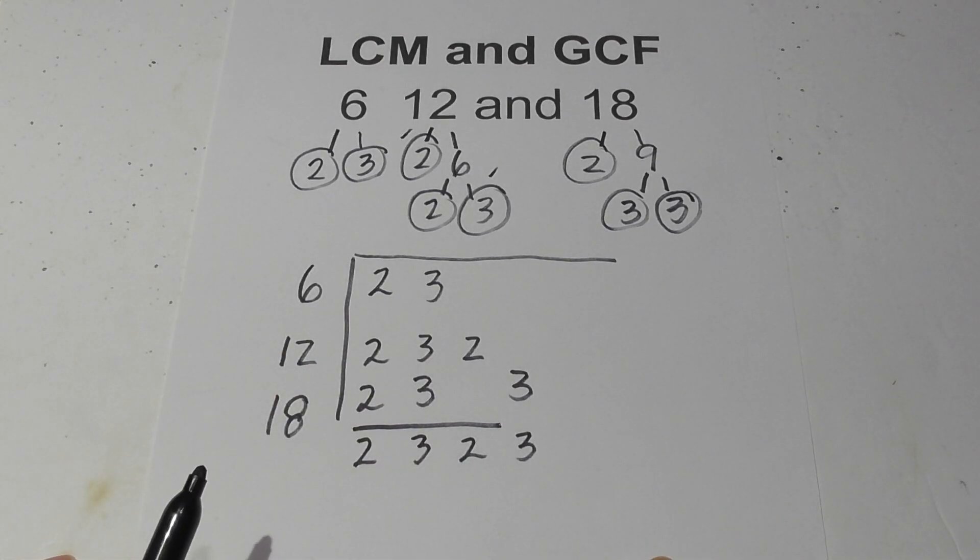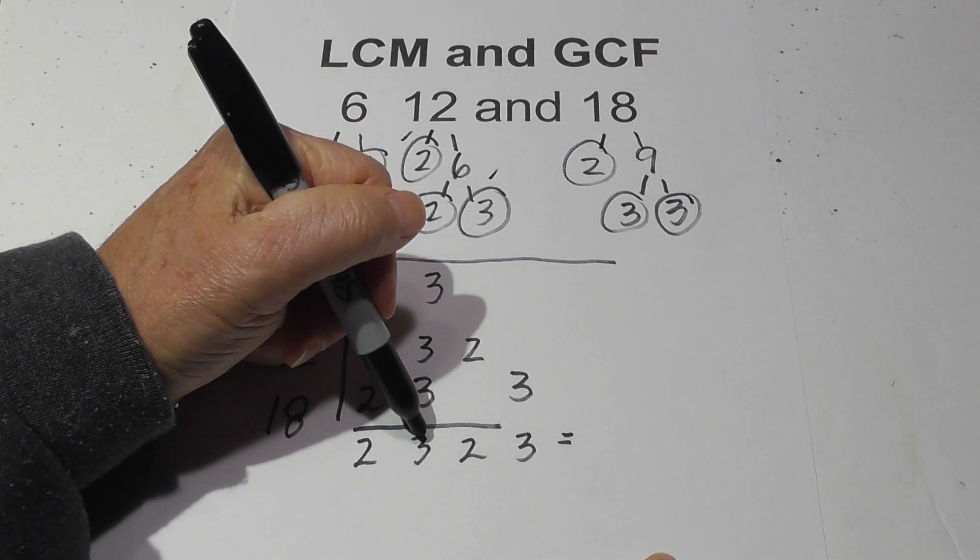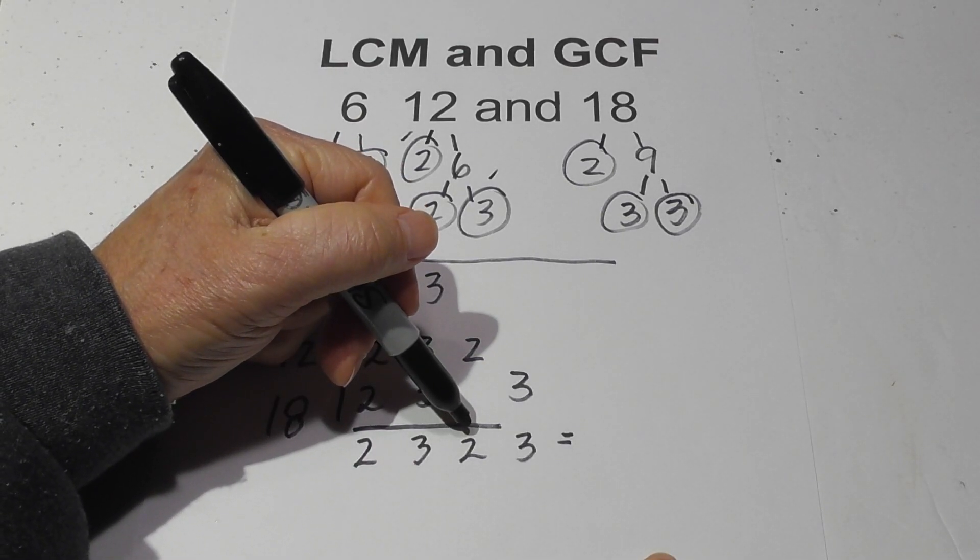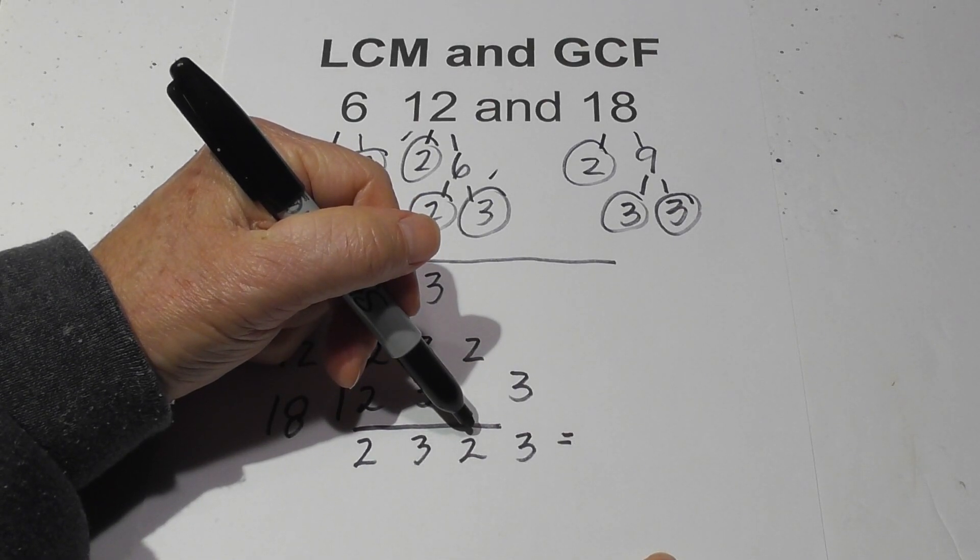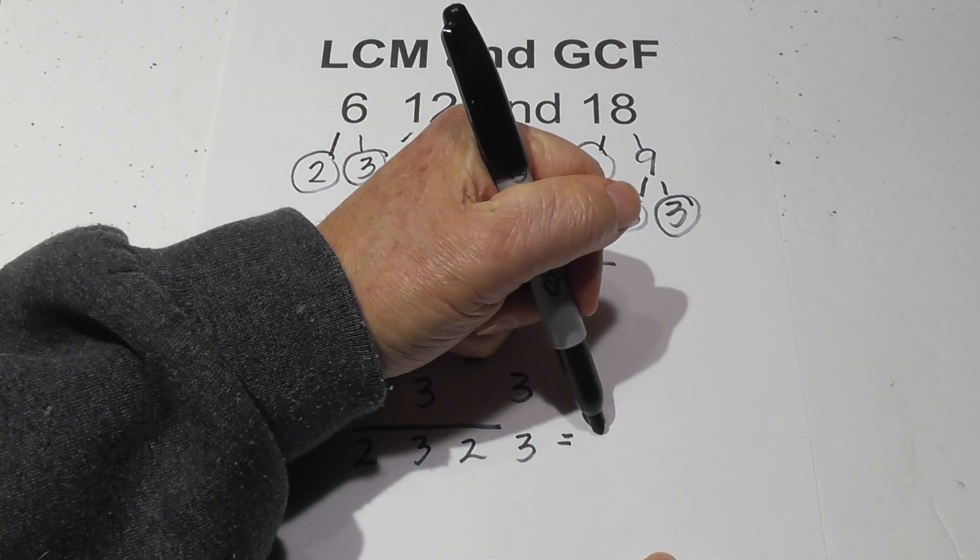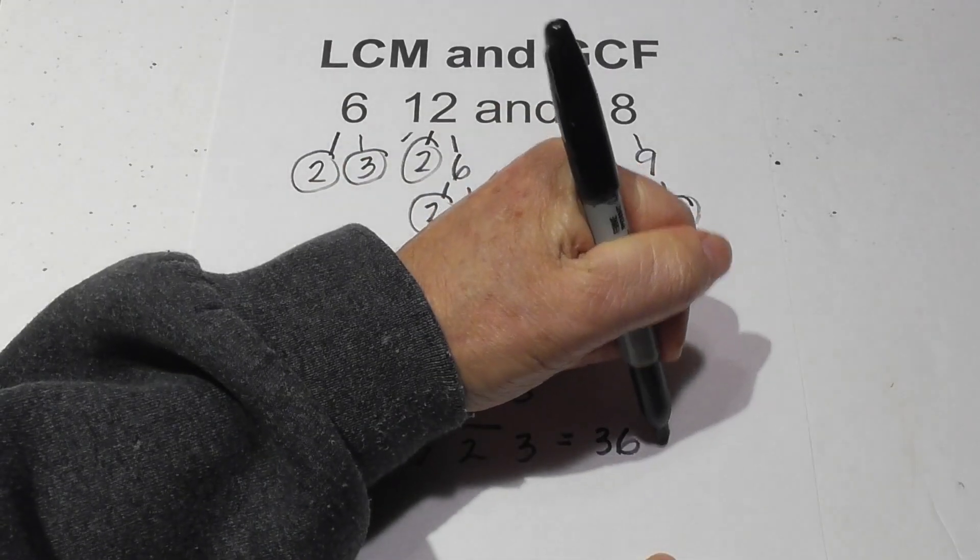Then all you do is multiply these together. When I do that, 2 times 3 is 6, 6 times 2 is 12, and then 12 times 3 equals 36. So that's the LCM.